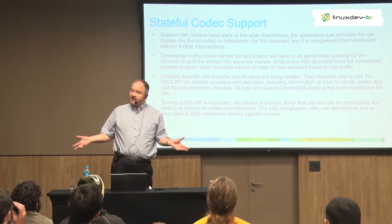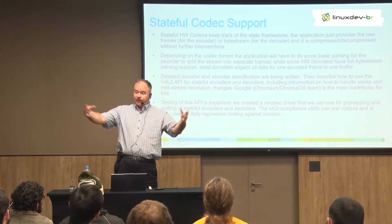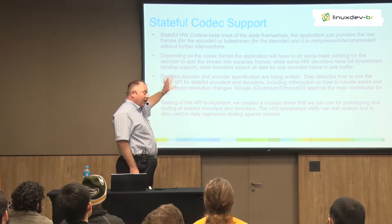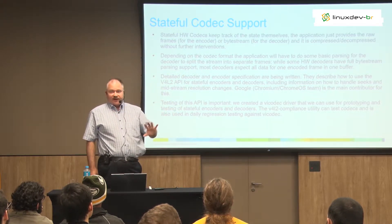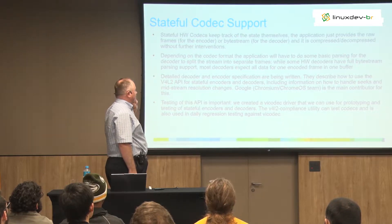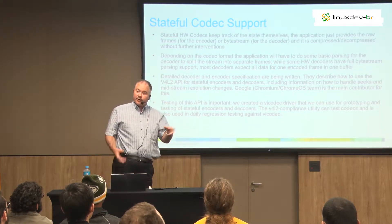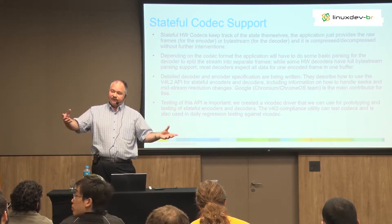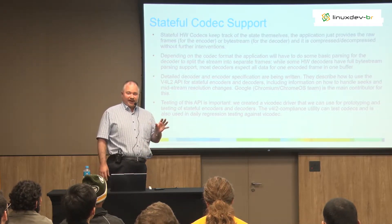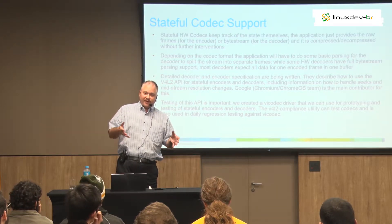We call them stateful codecs. Basically you give the raw frames or the compressed data and it will just process it — you don't need to know anything else. For the decoder, you give it the byte stream and out come the raw frames. The hardware keeps the state. It's very easy to use. Of course this gives overhead for the hardware. Some of the hardware decoders you can really just give a random byte stream and it will handle it — it will parse where the frames start and where they end.